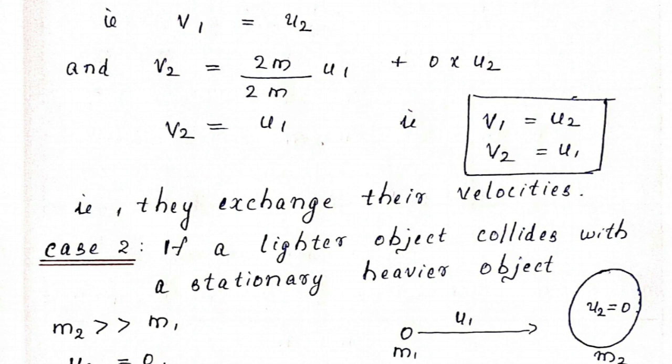So in short, v1 is equal to u2 and v2 is equal to u1 — that means they exchange their velocities. In an elastic collision between two identical bodies, they exchange their velocities. After the collision, the first body starts moving with the velocity of the second body and the second body starts moving with the velocity of the first body.